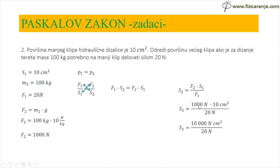F1 je 20 N. 1000 puta 10 je 10.000, prepišem merne jedinice N·cm², dole prepišem samo 20 N. 10.000 podeljeno sa 20 je 500, i N se skrati i ostaje samo cm².